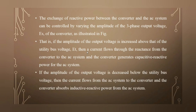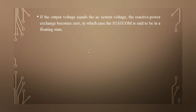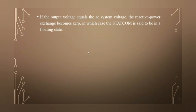If the amplitude of the output voltage is decreased below the utility bus voltage, then the current flows from the AC system to the converter and the converter absorbs inductive power from the AC system. If the output voltage equals the AC system voltage, the reactive power exchange becomes zero, in which case the StatCom is said to be in a floating state — when ET equals ES, there is no supplying or absorbing of reactive power.